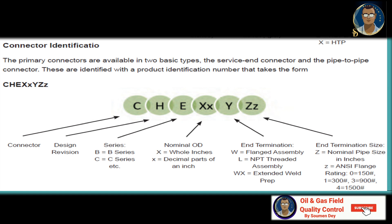Connector identification: pipe connectors are available in two basic types — the service end connector and the pipe-to-pipe connector. These are identified with a product identification number that takes the form: C H E X (capital X, small x) Y (capital Z, small z). C stands for connector, H stands for design division, E stands for the series (B for B series, C for C series, etc.). XX is for nominal OD: capital X for whole inches and small x for the decimal parts of an inch — for example, 6.25 inches means capital X is 6 and small x is 0.25. Y is the end termination.